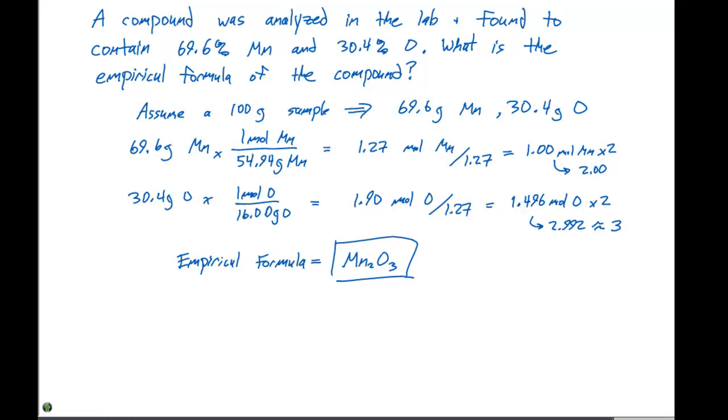That gives us our moles for both the manganese and the oxygen. Then we divide by the smallest number out of those two. In this case, the 1.27. That gives us one mole of manganese and 1.496 moles of oxygen.